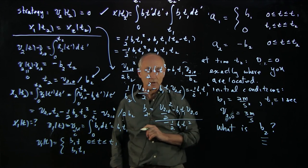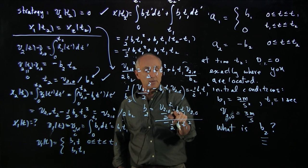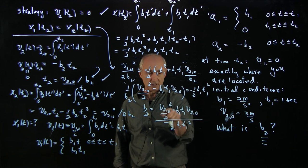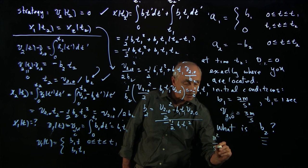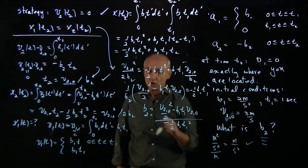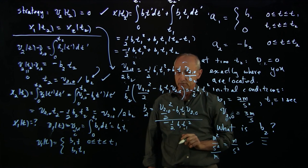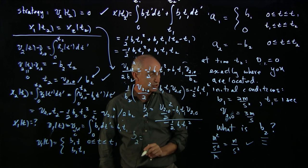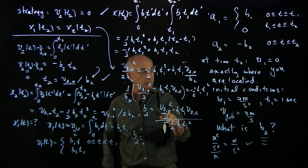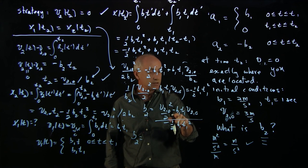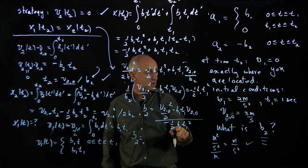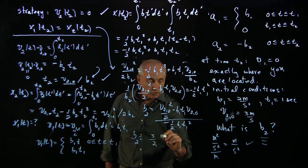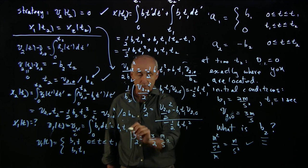Let's do a quick dimensional check. b times t has dimensions of velocity, so the numerator is velocity squared; b times t² has dimensions of position, giving meters squared per second squared divided by meters — that's meters per second squared. We're confident there's no algebraic error. Substituting the numbers — v2₀ equals 3 m/s, b1 equals 2 m/s², t1 equals 1 s — the numerator becomes minus 3/2 and the denominator is 1 second, giving b2 equals 3/2 meters per second squared.